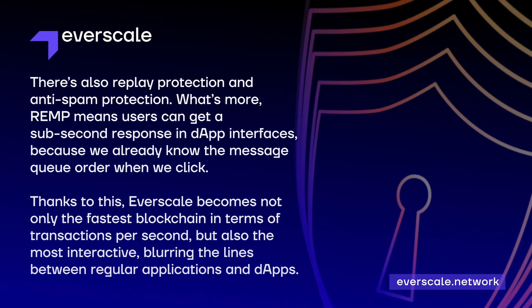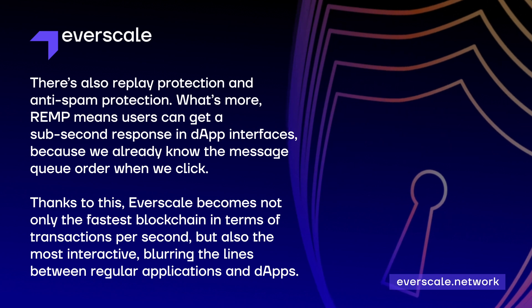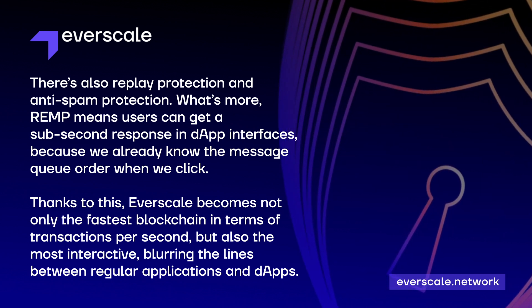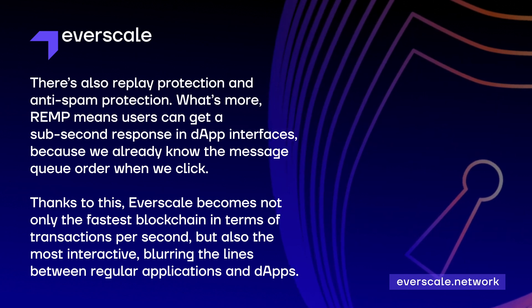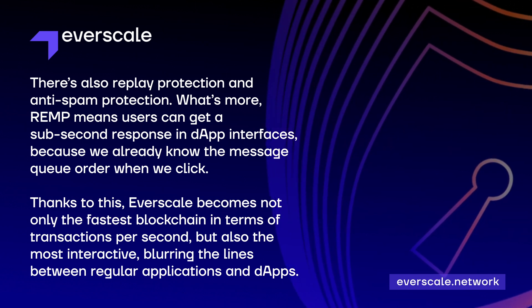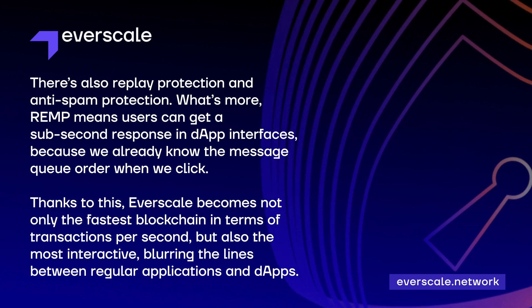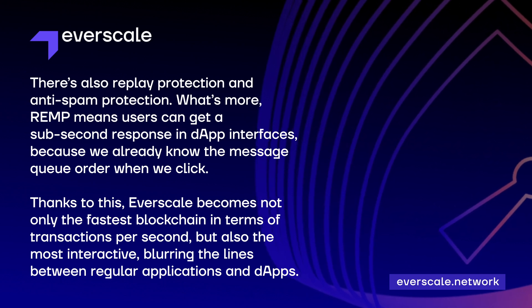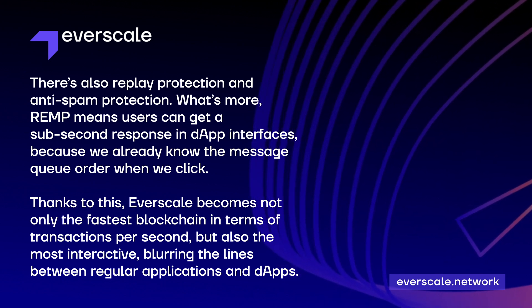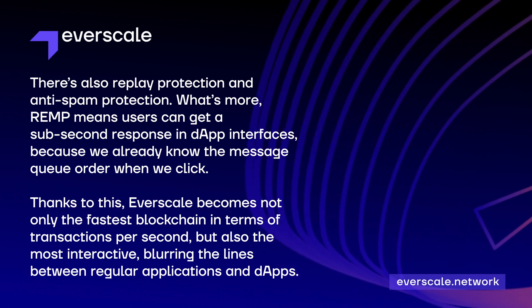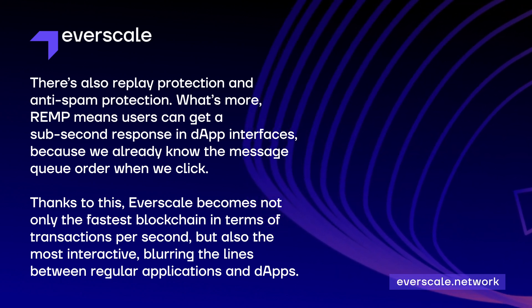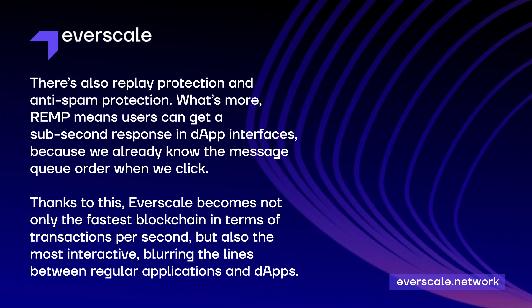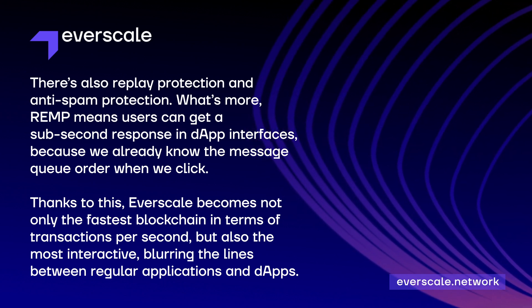There's also replay protection and anti-spam protection. What's more, REMP means users can get a sub-second response in dApp interfaces because we already know the message queue order when we click. Thanks to this, Everscale becomes not only the fastest blockchain in terms of transactions per second, but also the most interactive, blurring the lines between regular applications and dApps.